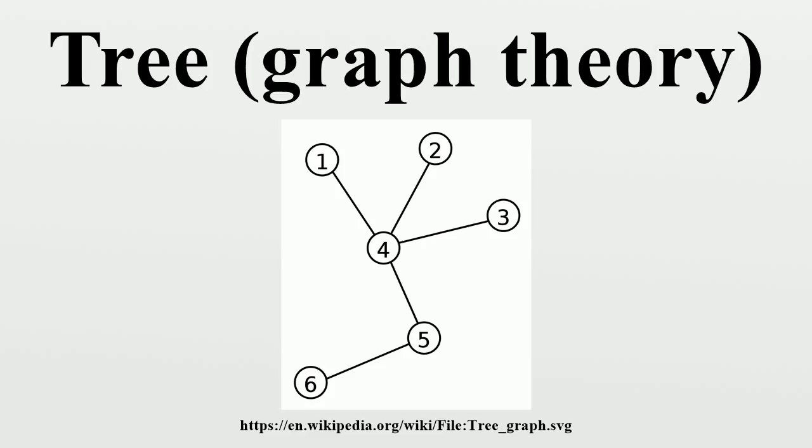Definitions: A tree is an undirected simple graph G that satisfies any of the following equivalent conditions. G is connected and has no cycles. G has no cycles, and a simple cycle is formed if any edge is added to G. G is connected, but is not connected if any single edge is removed from G.